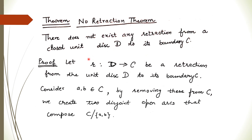To prove this, we proceed by contradiction. Suppose R is a mapping going from the disk to the boundary and is a retraction. Now we consider any two points on the boundary — let these points be A and B. If we remove points A and B from the boundary C, we get two disjoint open arcs whose union is C minus {A, B}.